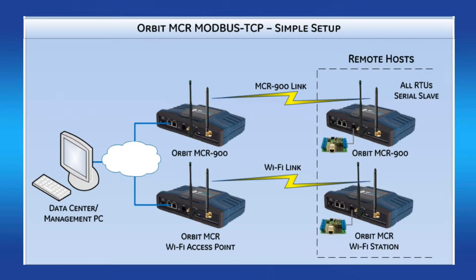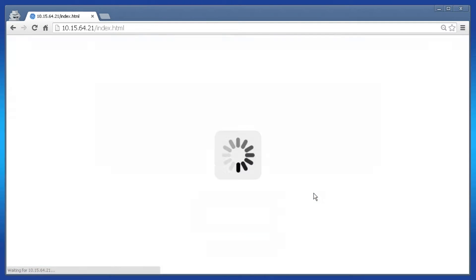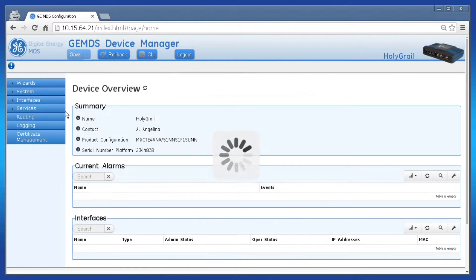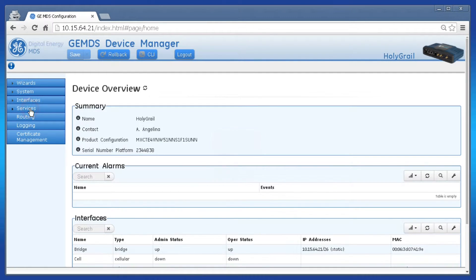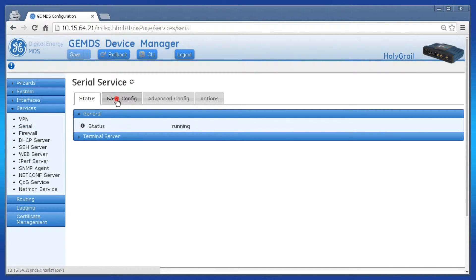I will configure the server to use the COM1 serial port. Therefore, to communicate with the device, I am logged in using a secure SSH connection. When the device is configured, I'll demonstrate the feature by polling a simulated RTU using the Modbus protocol. To configure this using the web GUI, log in as admin and click Services on the left, then click Serial.